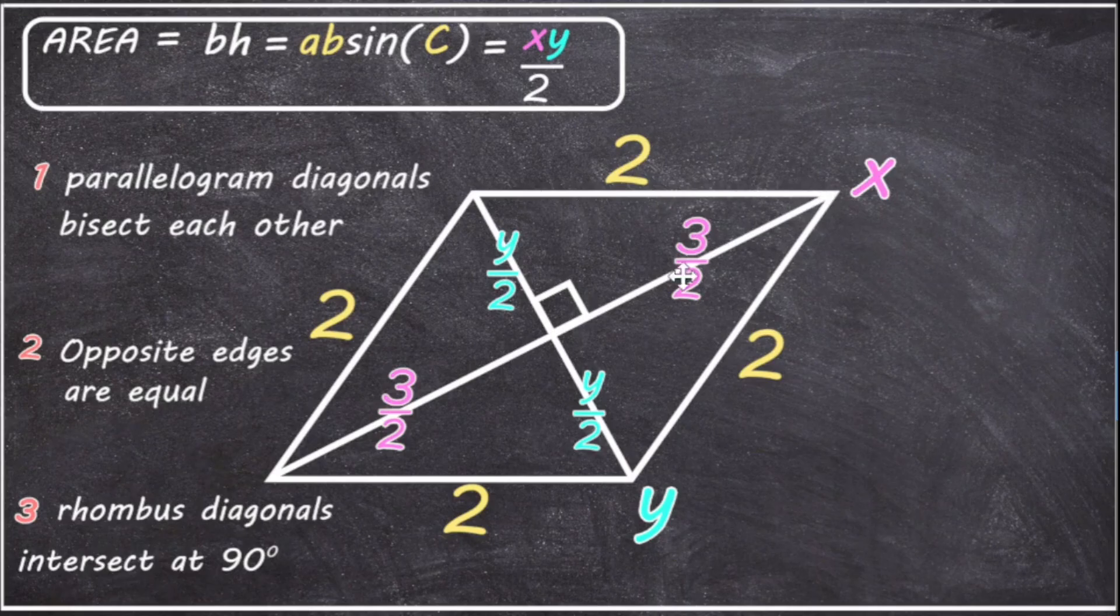And since we have two of the edge values of the triangle, we can use Pythagoras to figure out the third edge, which is Y over two. And then we can just double that, which will give us a length of Y. And then we can use the equation X times Y over two to give the area of the parallelogram.